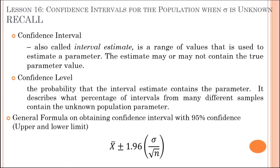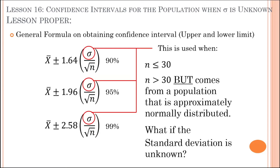The general formula for obtaining a confidence interval at 95% confidence, for the upper and lower limit, is x-bar plus or minus 1.96 — which is the confidence coefficient — multiplied by the ratio of the standard deviation and the square root of the total number of samples. These confidence coefficients are used when the population standard deviation is known, and also when the total sample size is less than or equal to 30.